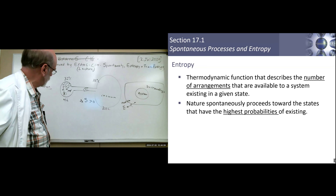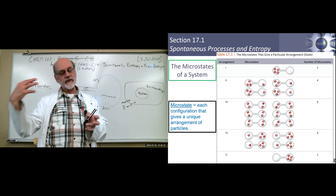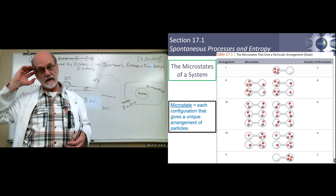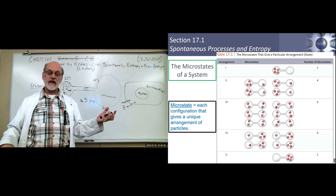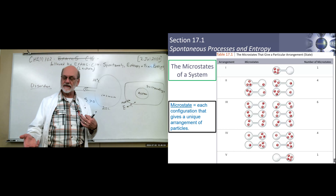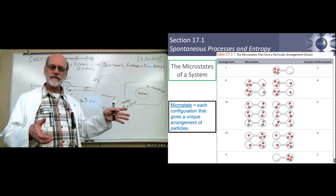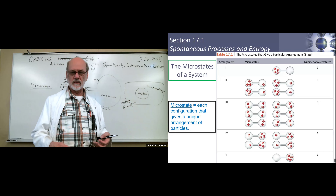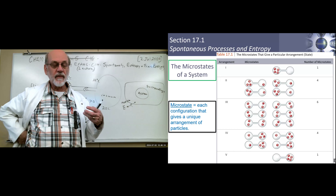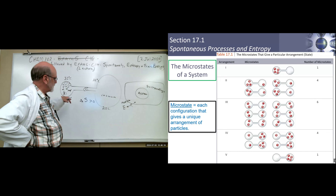Each configuration gives a unique arrangement of particles. If we have four particles in a double bulb, one possibility is all four on one side — that's only one microstate. Moving them all to the other side is also only one microstate. If we move one to one side and leave three on the other, we have four possibilities. If we put two on the left and two on the right, we have six total microstates. The greatest number of microstates is the one where we have two on one side and two on the other, roughly corresponding to equalized pressure.